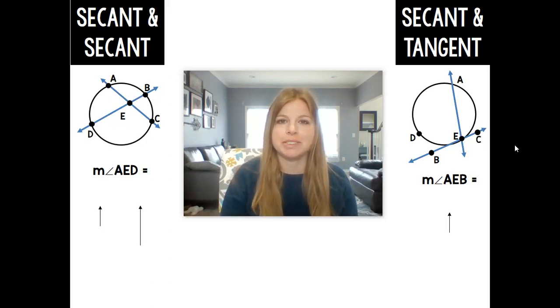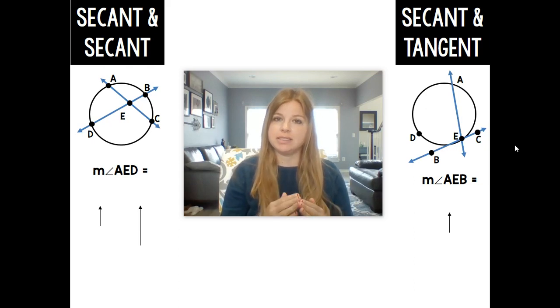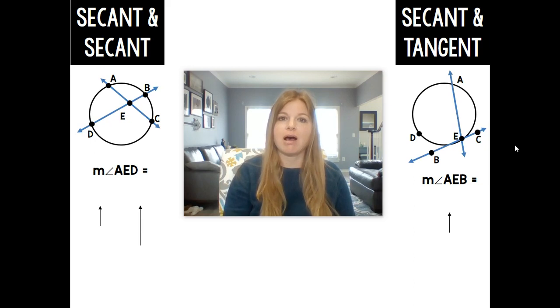Hi, welcome to my video where today we're going to be talking about what happens when you have two secants intersecting inside of the circle or when you have a secant and a tangent intersecting on the circle or on the edge of the circle. So we're going to take a look at these two cases.